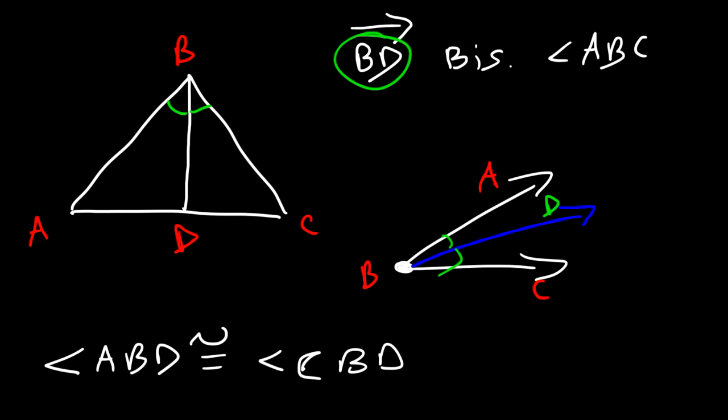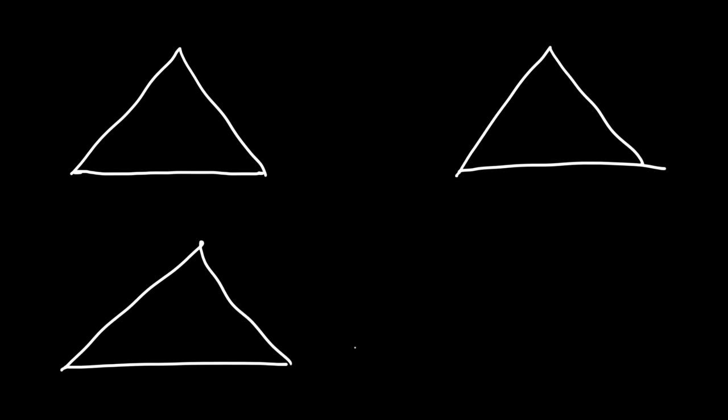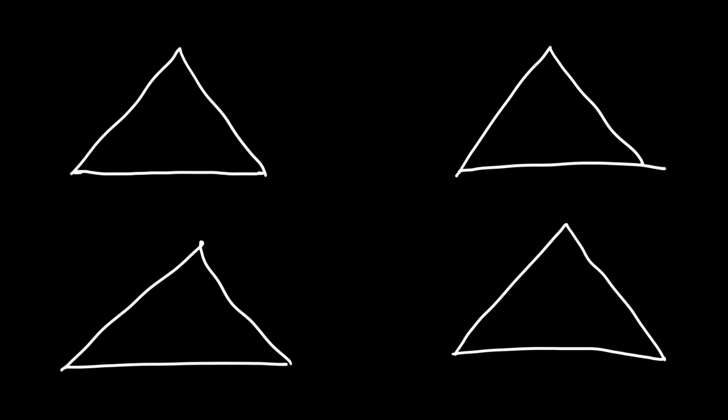You draw the angle bisector starting from the vertex of a triangle, and then it points to the opposite side. Angle bisectors, by definition, are rays.